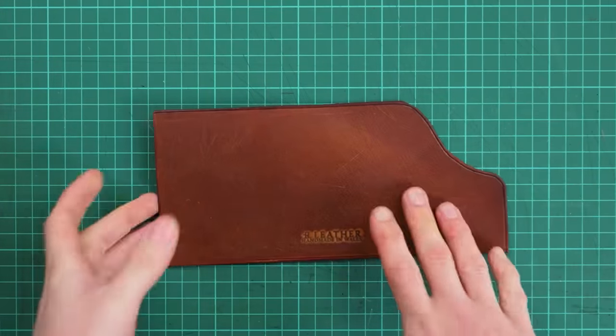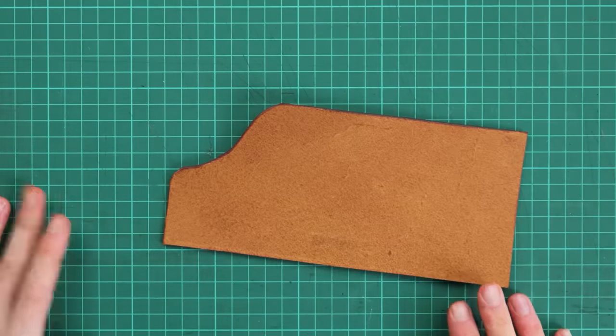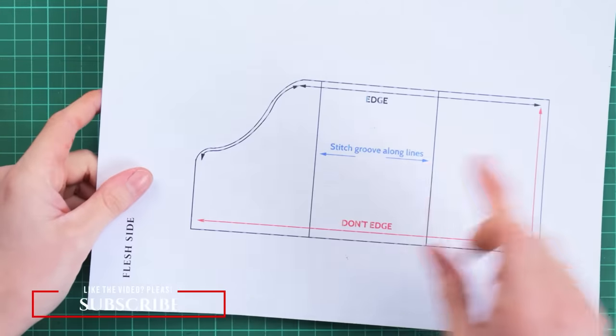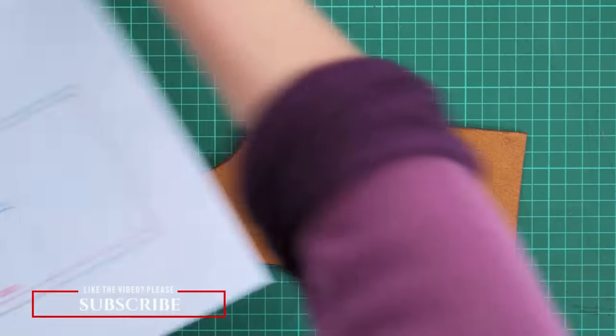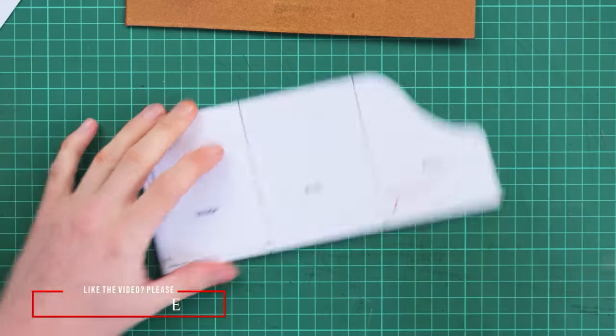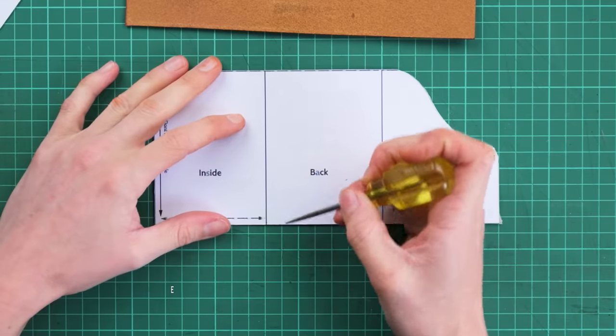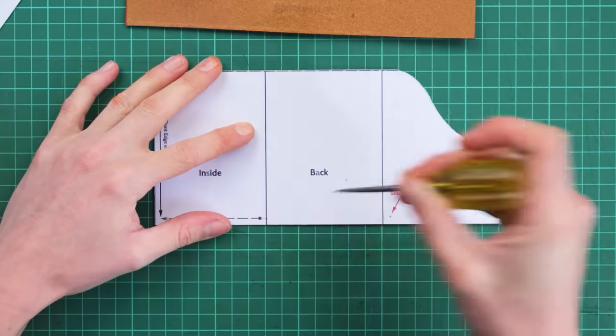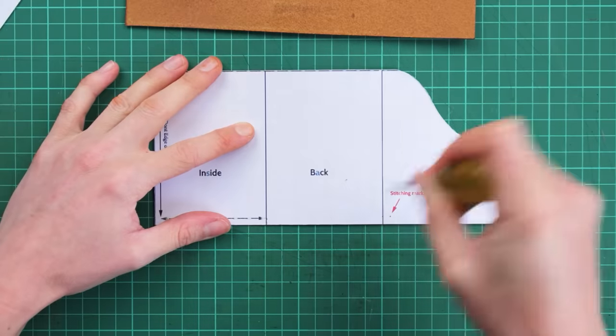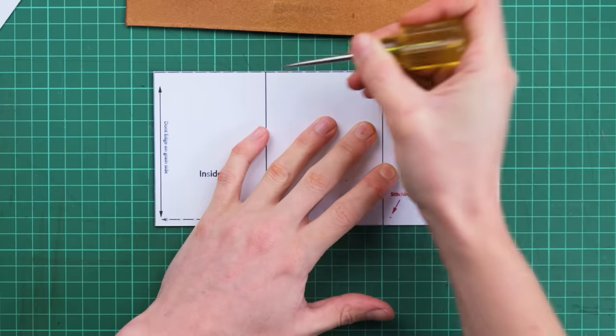And now we should have a card wrap that looks a little bit like this and what we're going to do is now draw onto the flesh side the stitch groove marks. So what we're going to do is transfer the lines on our pattern by pushing an awl all the way through on the top and bottom of those lines.